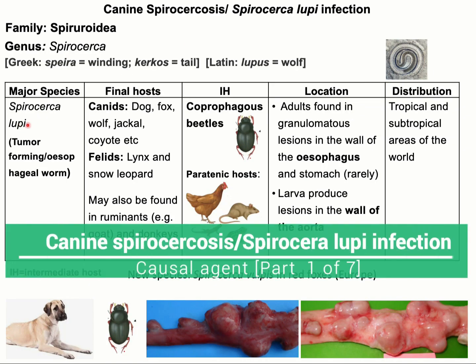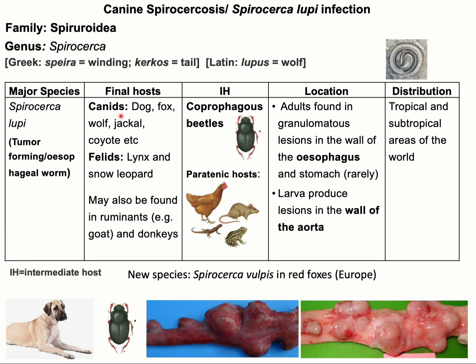The name of the parasite is Spirocerca lupi. The final hosts of these parasites are different canids such as dog, fox, and wolf, and it also occurs in different felids which are listed here. The intermediate host of this parasite is...